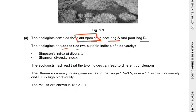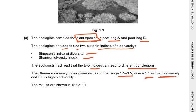The ecologists decided to use two suitable indices of biodiversity: Simpson's Index of Biodiversity and Shannon Diversity Index. The ecologists had read that the two indices can lead to different conclusions. The Shannon Diversity Index gives a value of 1.5 to 3.5.